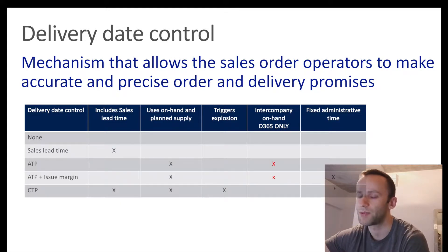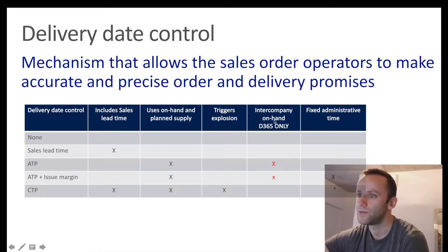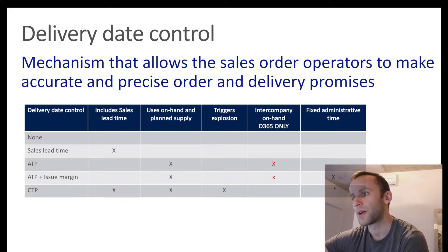This is the matrix that represents different delivery control types. We have 'None' which has no delivery date control whatsoever. Sales lead time remains the same in both environments. For ATP - available to promise - there is a new column which is intercompany on-hand, and it's only available in Dynamics 365. ATP plus issue margin is the same concept, we just include an additional issue margin. For CTP - capable to promise - which stands for make-to-order manufacturing process, there are no changes.